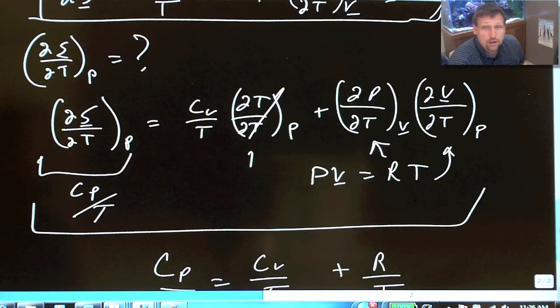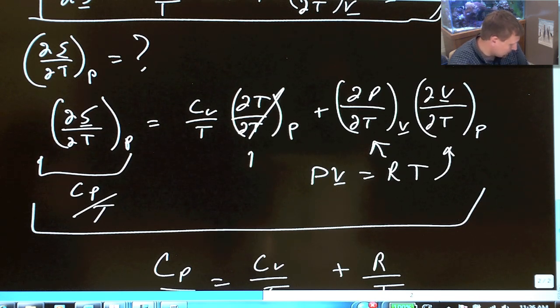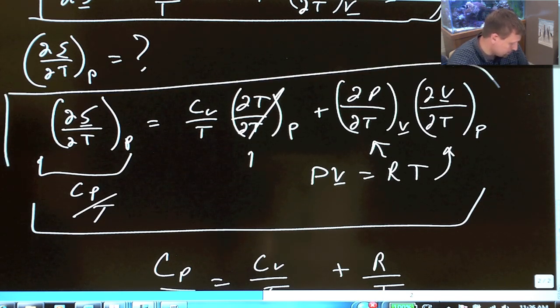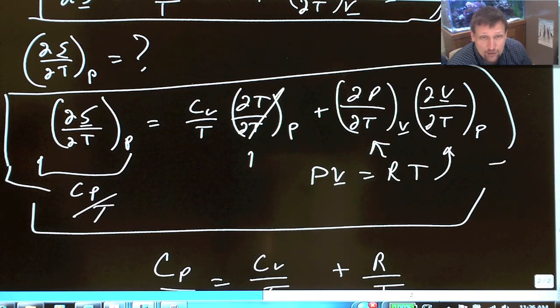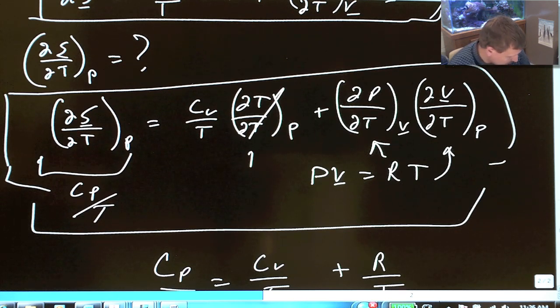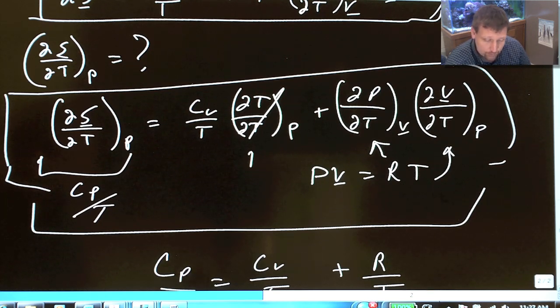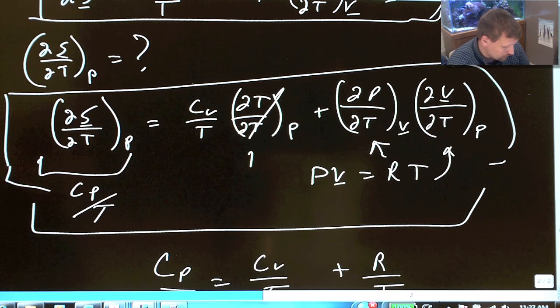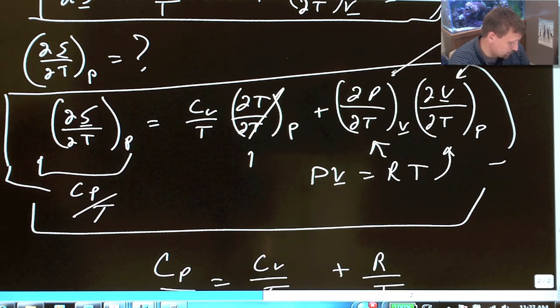If you're using a more realistic equation of state, you pretty much can still use this result in this relationship here. Just substitute in the equation of state that you're using to see if you can simplify it any further. You might not be able to make it much better. But at least this gives you the relationship between Cp and Cv in general for other cubic equations of state or whatever other equation of state you might want to use in these relationships right here. That's it. Thank you.